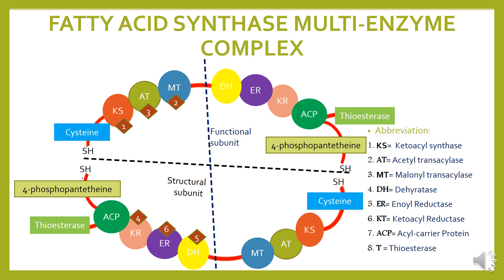Fatty acid chain ki elongation ke liye yeh steps aur yeh reactions 2 to 6 times repeat honge. Is ki repetition ki timing long chain of fatty acid ki length par vary karti hai. Agar koi long chain fatty acid 10 carbon containing hai to steps ki repetition 4 times hogi. Agar 12 carbon hai to 5 times. Yeh step ki repetition fatty acid ki chain ki length par depend hai.